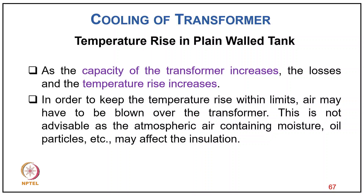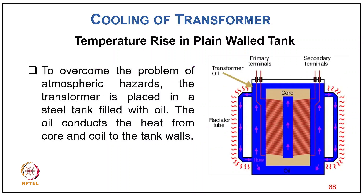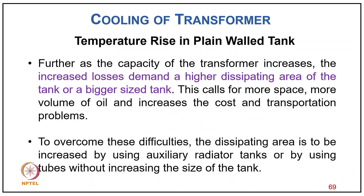As transformer capacity increases, losses and temperature rise also increase. To keep temperature rise within limits, air may be blown, but atmospheric air containing moisture and oil particles may affect insulation. To overcome this, the transformer is placed in a steel tank filled with oil, which conducts heat from core and coil to the tank wall. For larger ratings, the dissipating area is increased using tubes or radiators without increasing tank size.